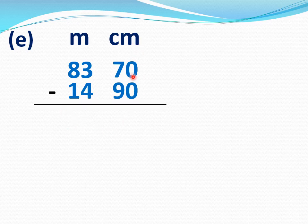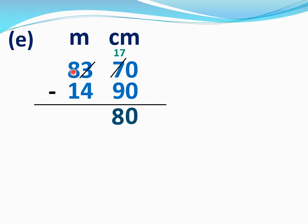Now subtract this. 0 minus 0 is 0. Now see, this 7 is smaller than 9, so we will borrow from the next number. This 8 will become 7 and this 2 will become 12. 12 minus 4 is 8. 7 minus 1 is 6. Answer is 68 meters 80 centimeters.